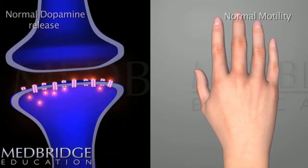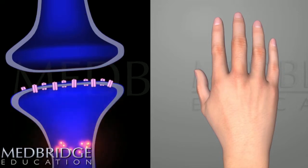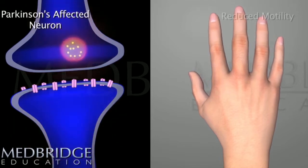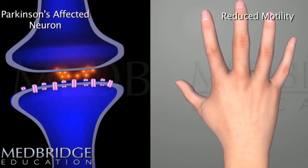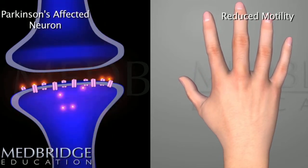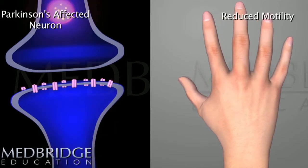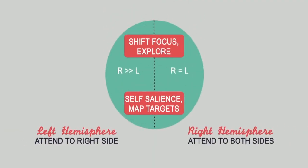The clinical emphasis of this course will begin with a review of symptoms associated with focal right hemisphere lesions, including neglect, aprosodia, emotional processing, and visual-spatial problems.